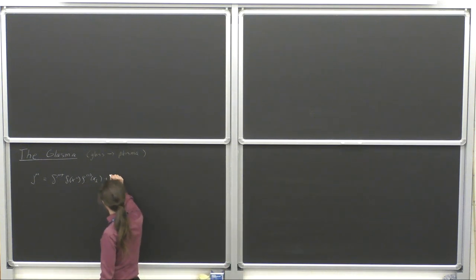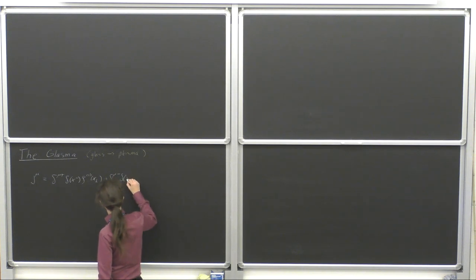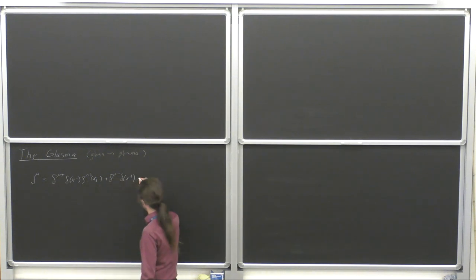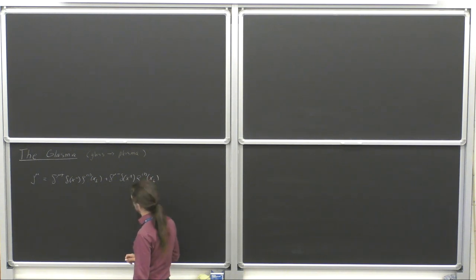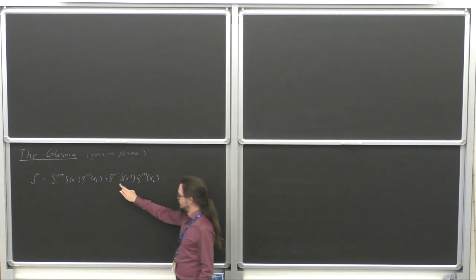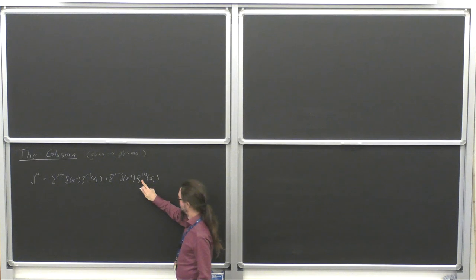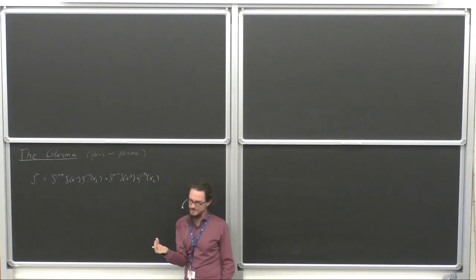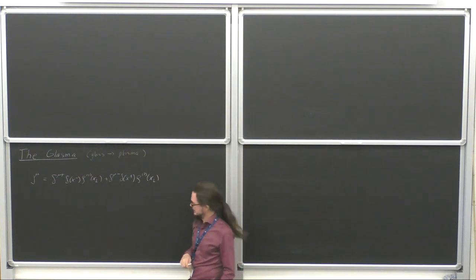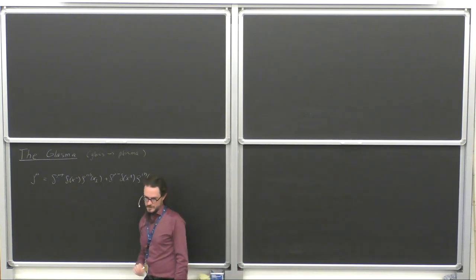Then we have another current which describes another nucleus going in the other direction, in the minus direction, living on the X plus equals zero light cone, described by another color charge density. This is a little bit of a formal way of writing it — really you should think of this as a rho which depends on X plus but is very sharply peaked, almost a delta function, and the same thing for this one.